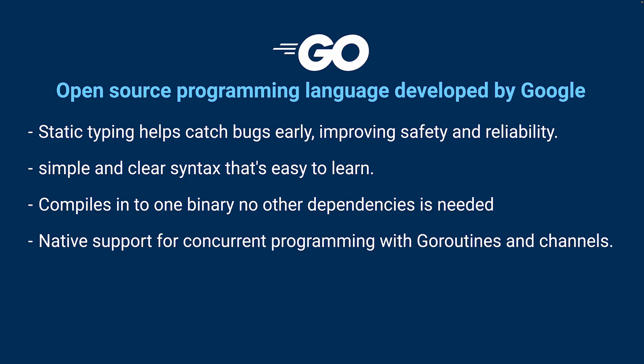Concurrency support: Go supports concurrency naturally with features like goroutines and channels. These help your program do many things at the same time efficiently, making them faster and more responsive without making the code complex.